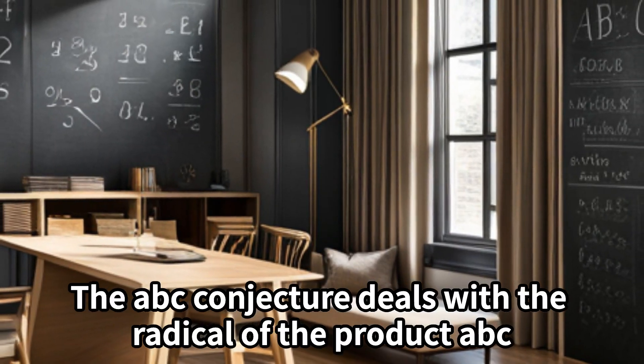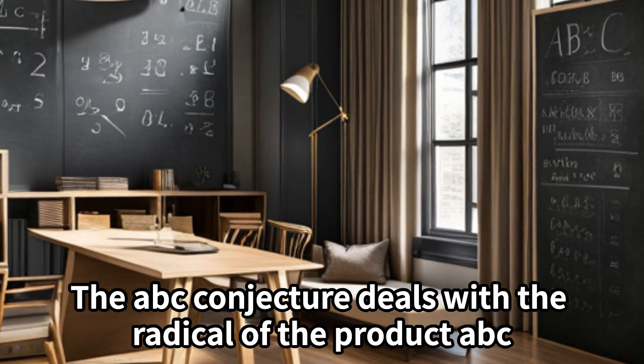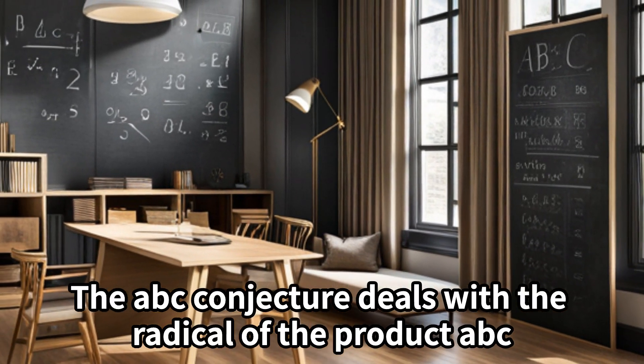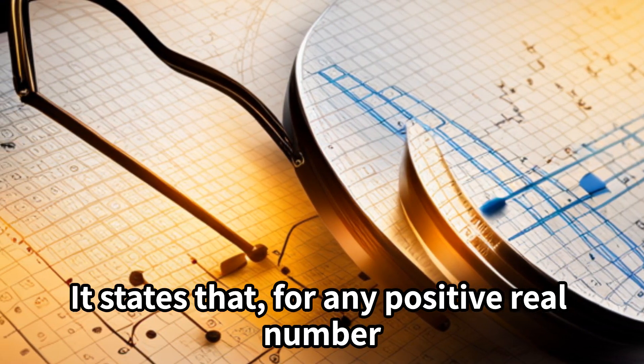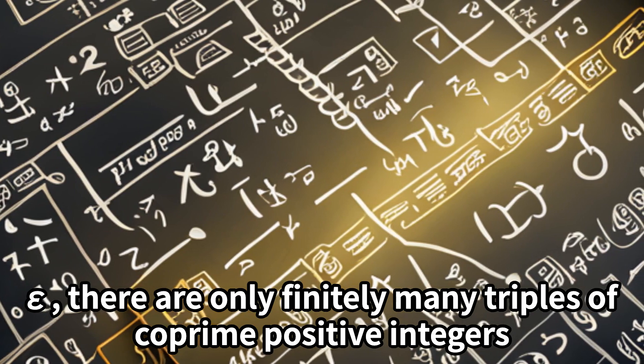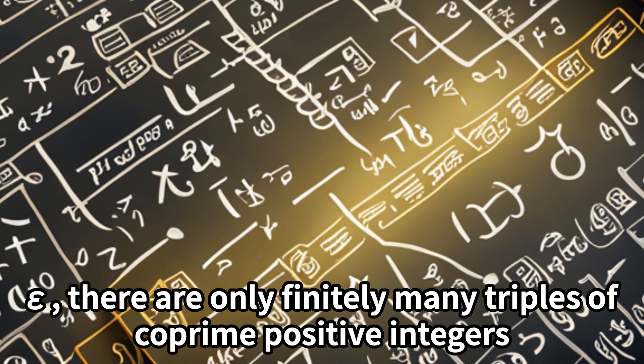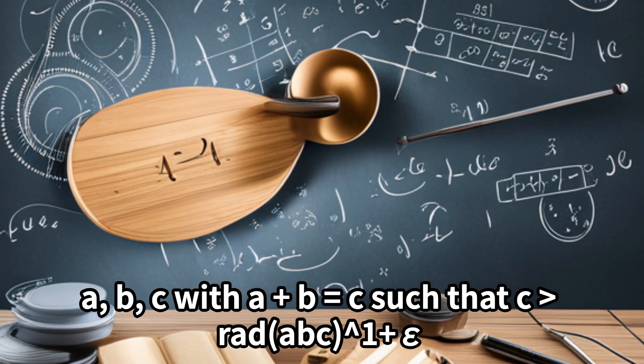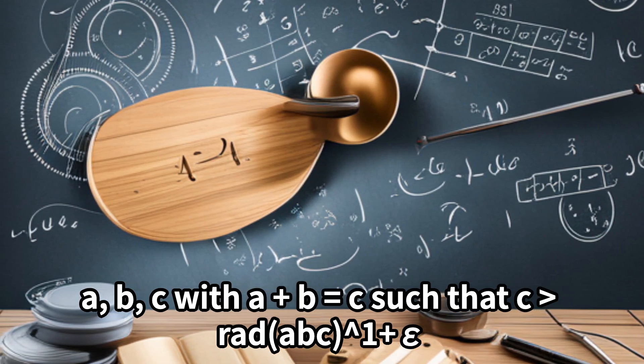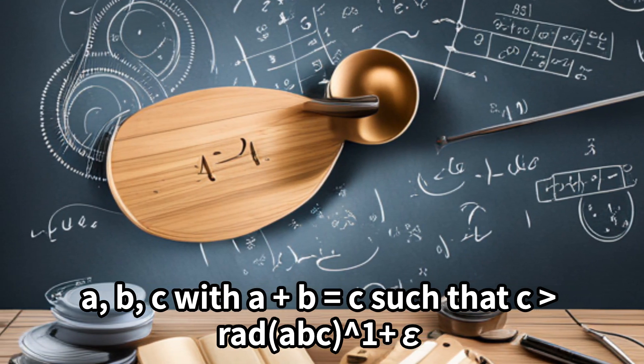The ABC conjecture deals with the radical of the product ABC. It states that for any positive real number epsilon, there are only finitely many triples of positive integers A, B, C with A+B=C such that C > rad(ABC)^(1+epsilon).